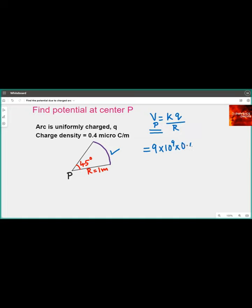The charge density is 0.4 micro coulomb and the length of the arc in radians is 5 by 4 times the radius which is 1, the entire thing divided by 1.